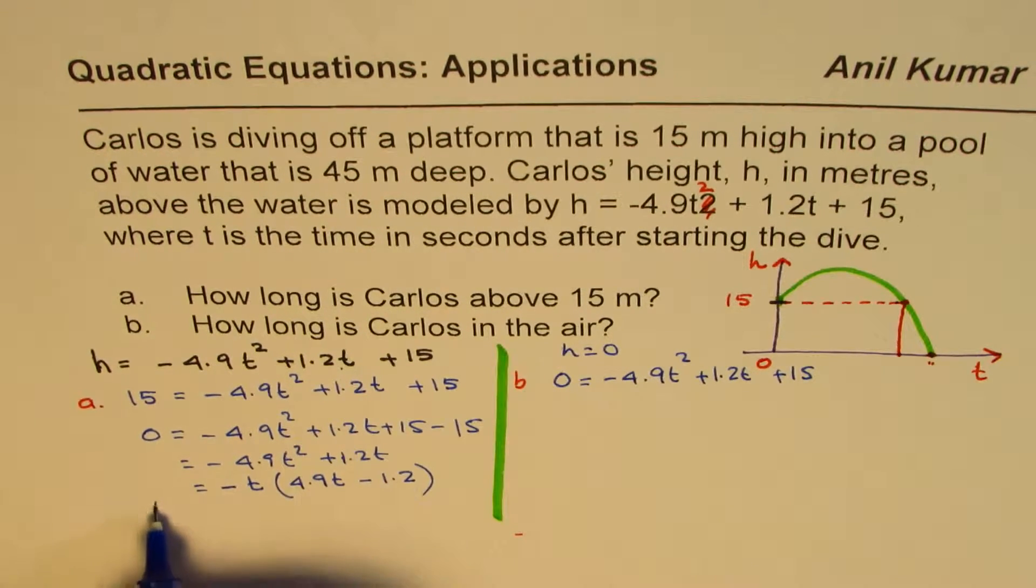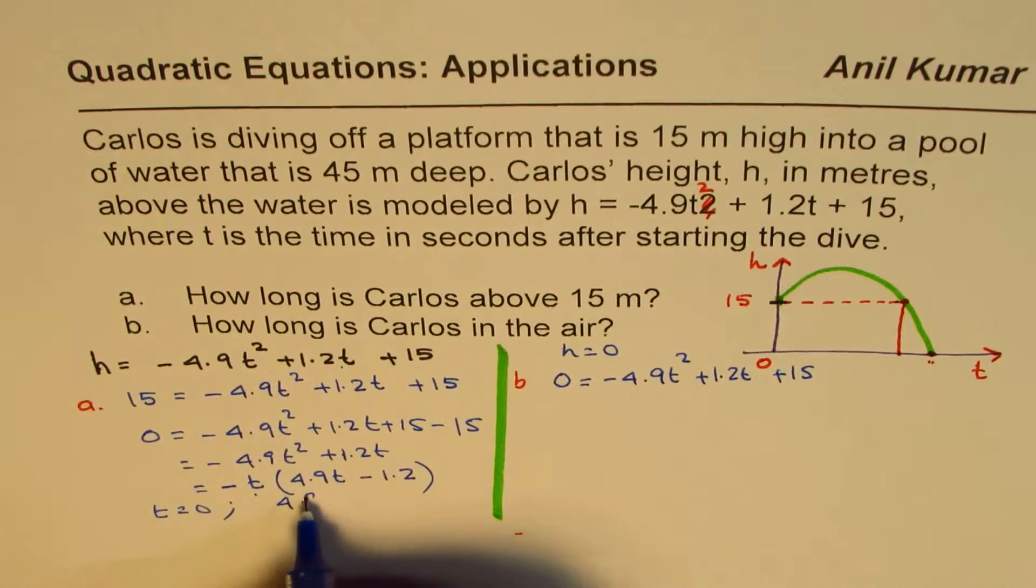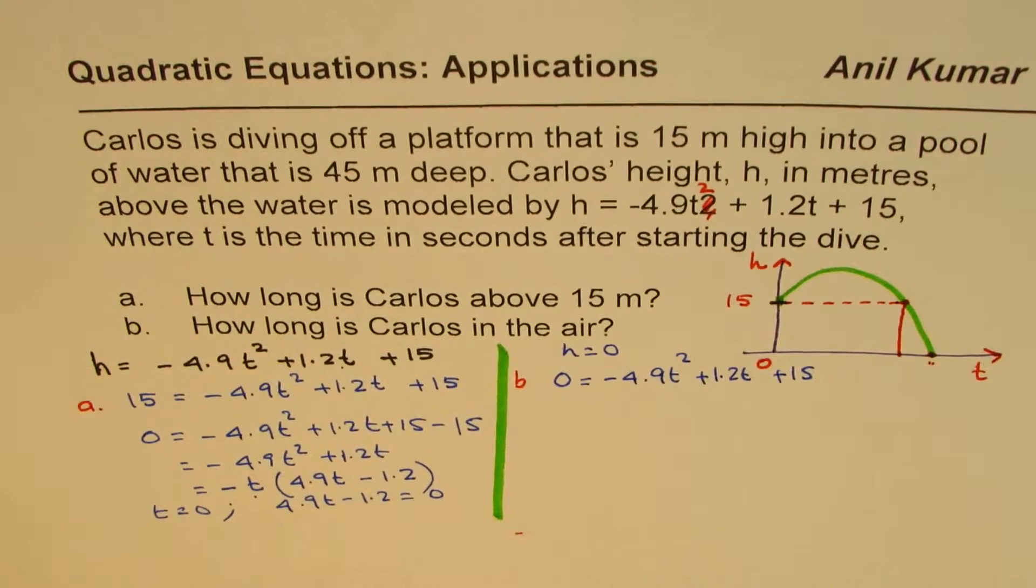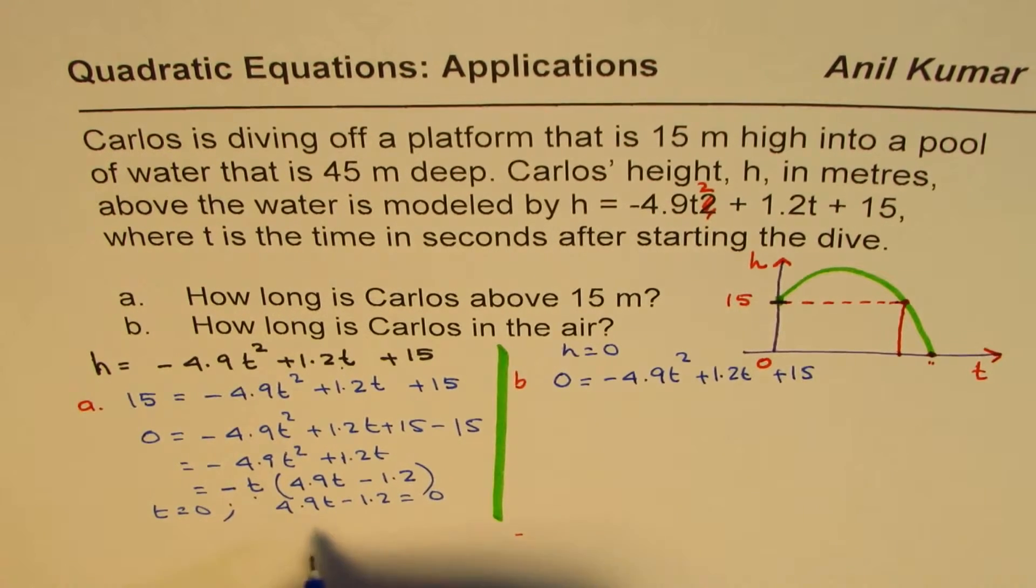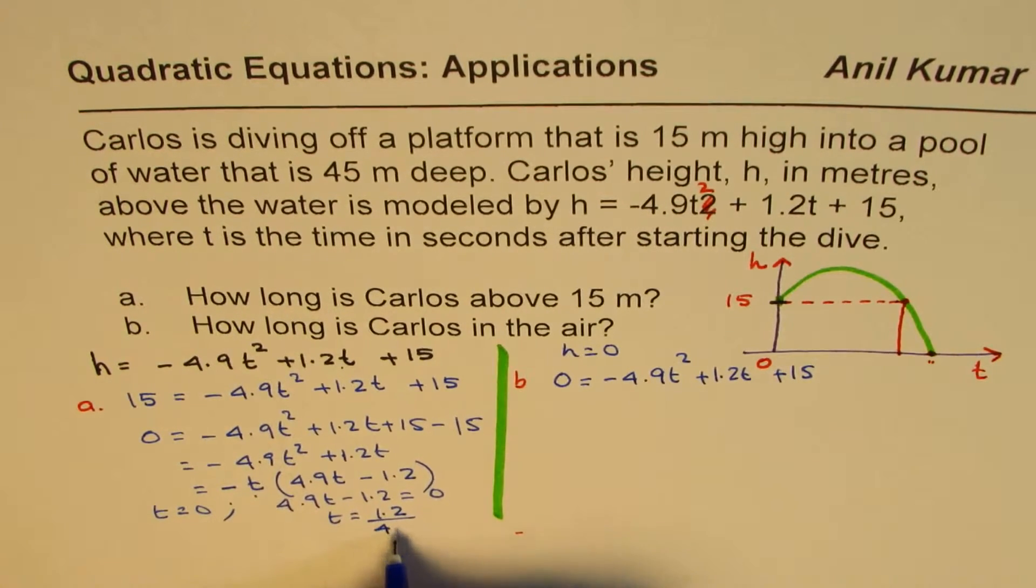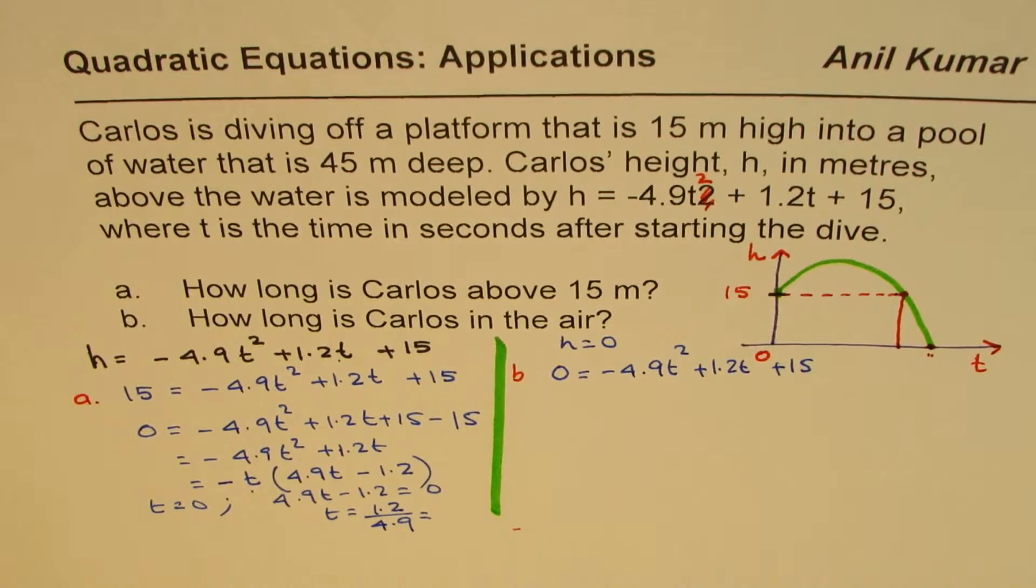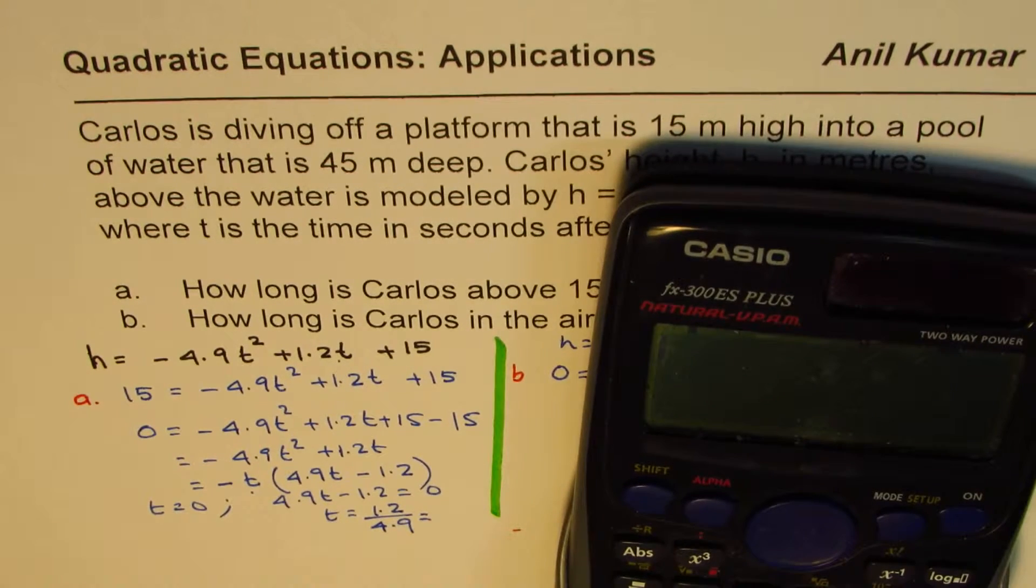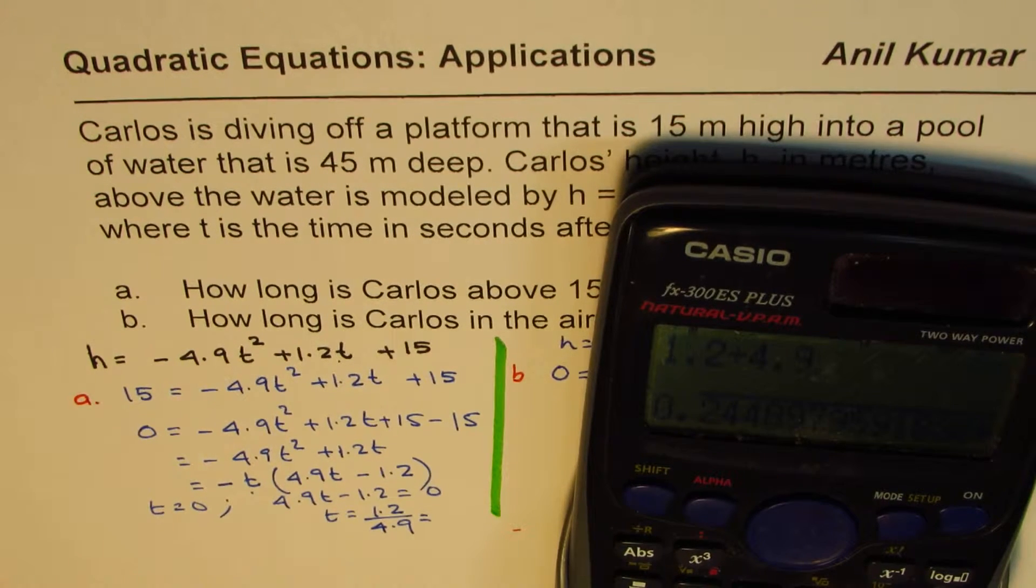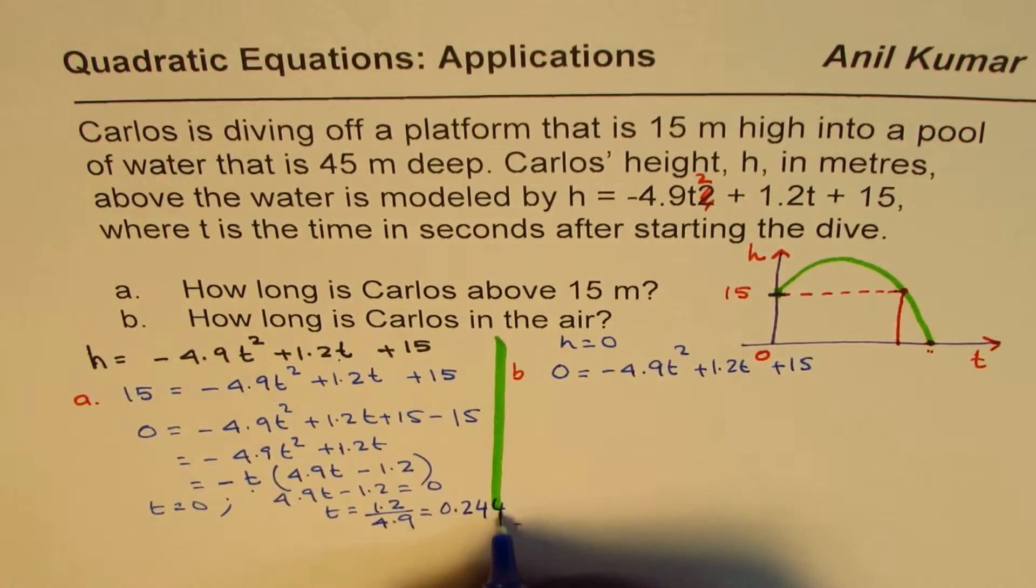This is 0 when t equals 0, or when 4.9t minus 1.2 equals 0. If you solve this, you get time t. So t equals, taking 1.2 dividing by 4.9. So that is how you find this time, and this time is in seconds. 1.2 divided by 4.9 equals 12 over 49, or 0.244 seconds.